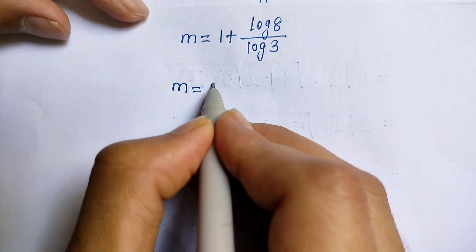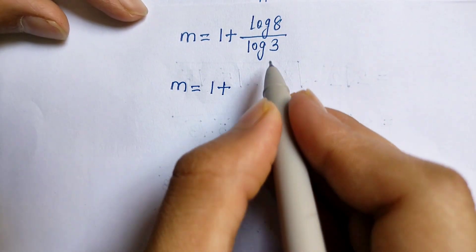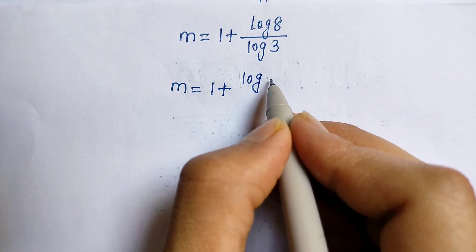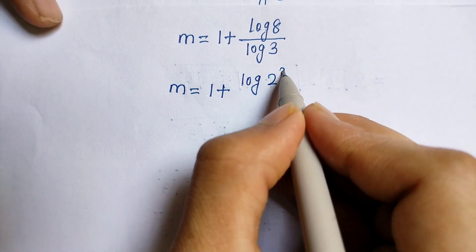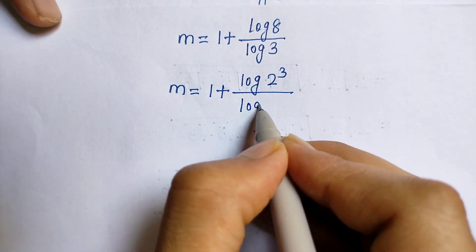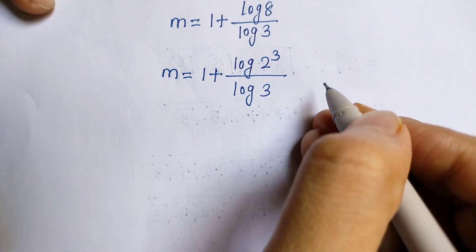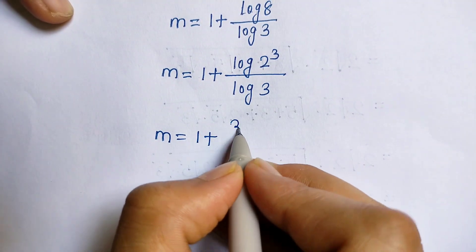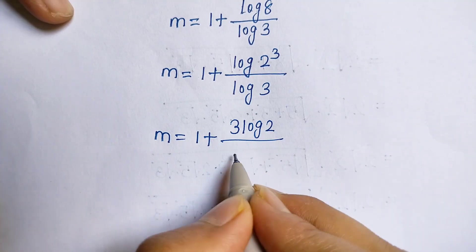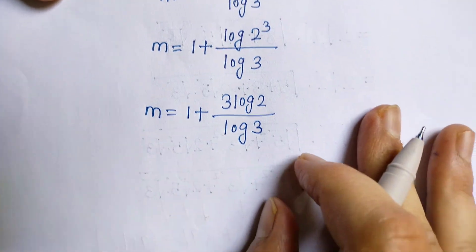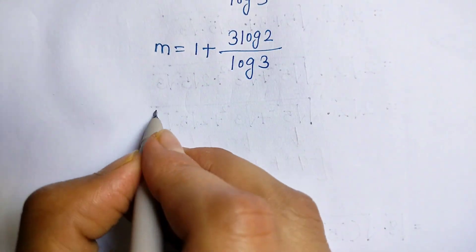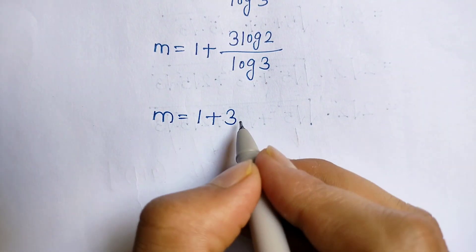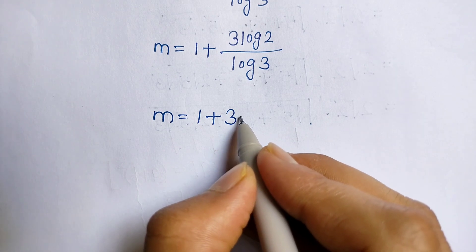Now m is equal to 1 plus log 8 divided by log 3. We can write log 8 as log 2 to the power 3, since 2 to the power 3 is 8. Applying the power rule, we get m is equal to 1 plus 3 log 2 divided by log 3.